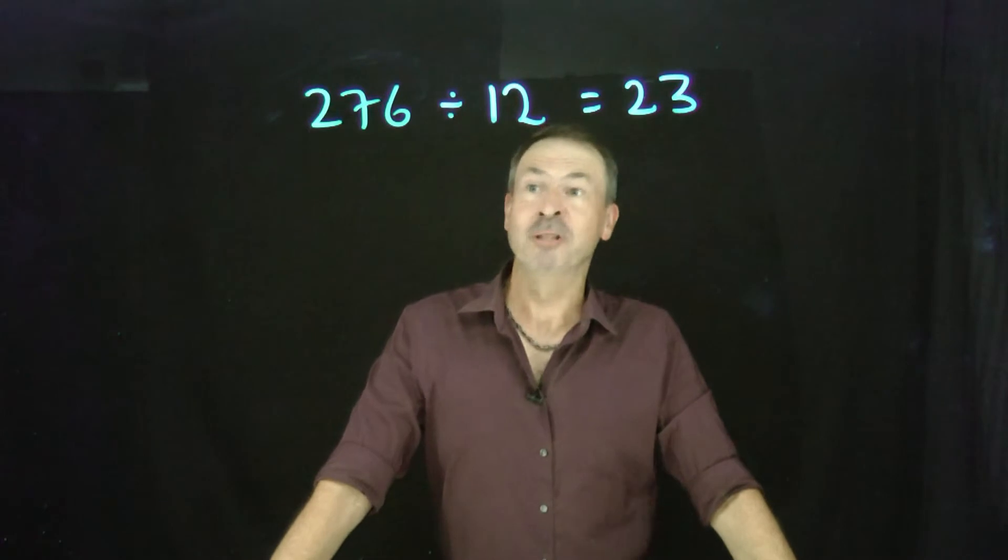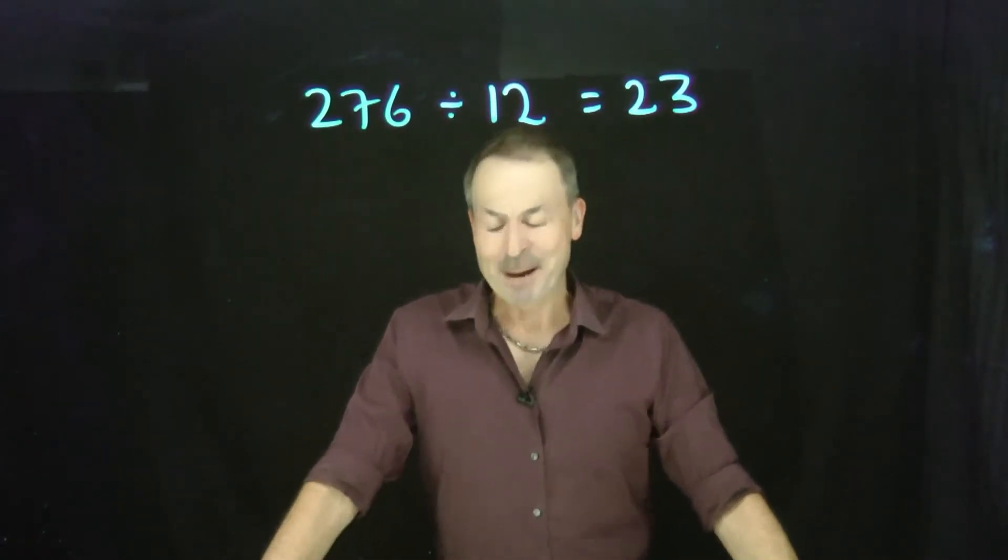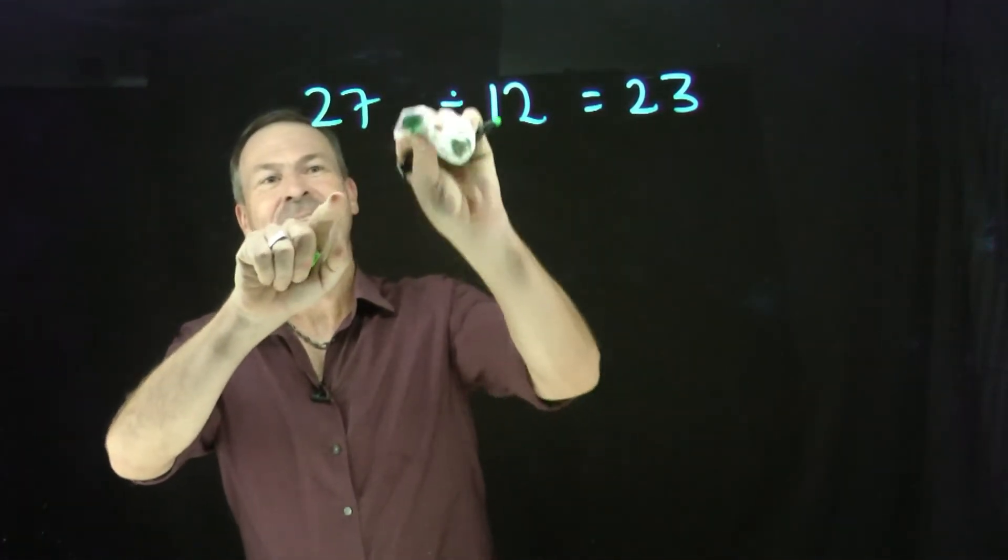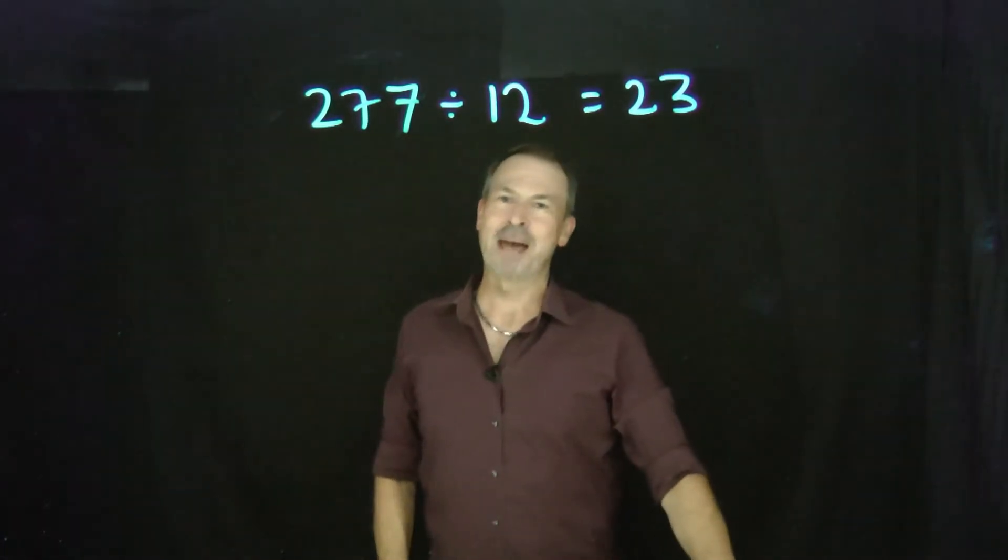We've seen a couple of times now that 276 divided by 12 is 23. And it is. But let me ask this. What if I change 276 to 277? 277 divided by 12.